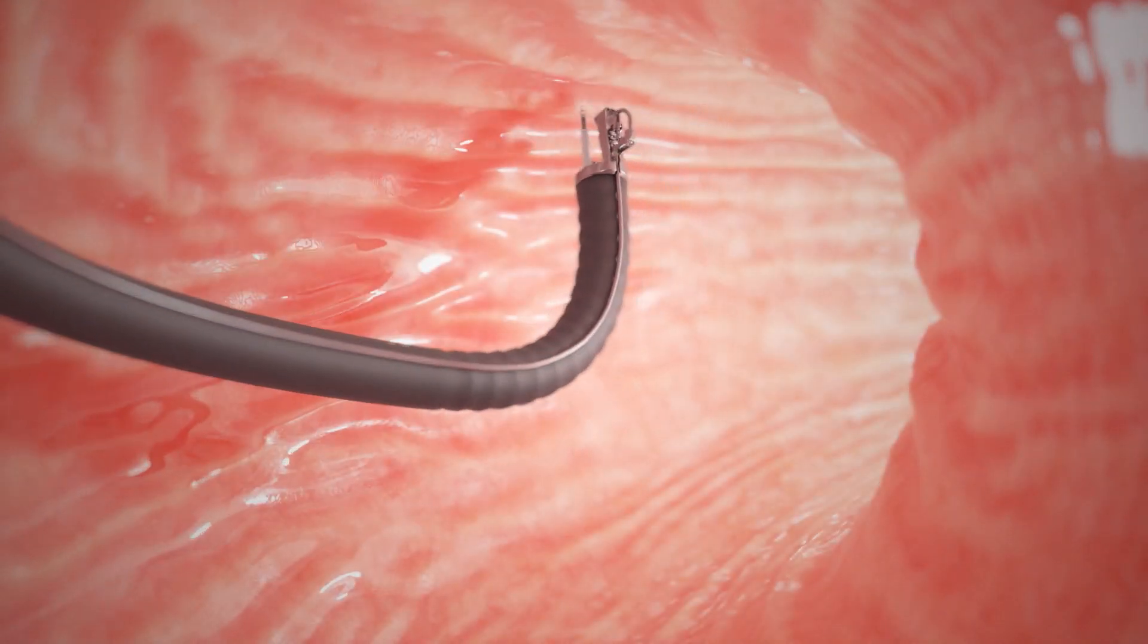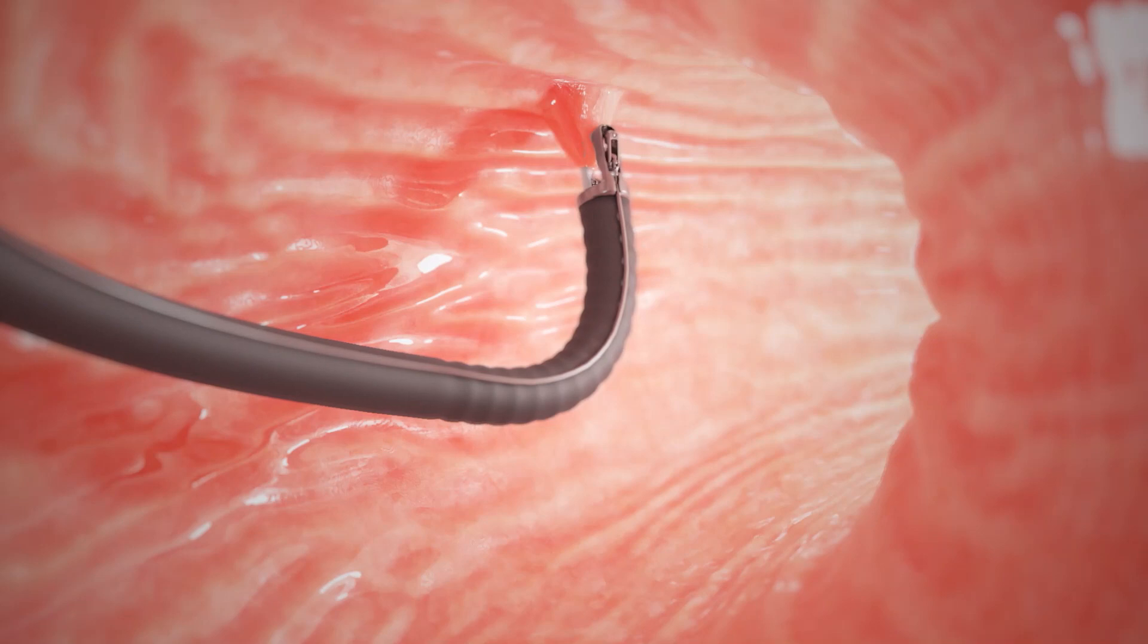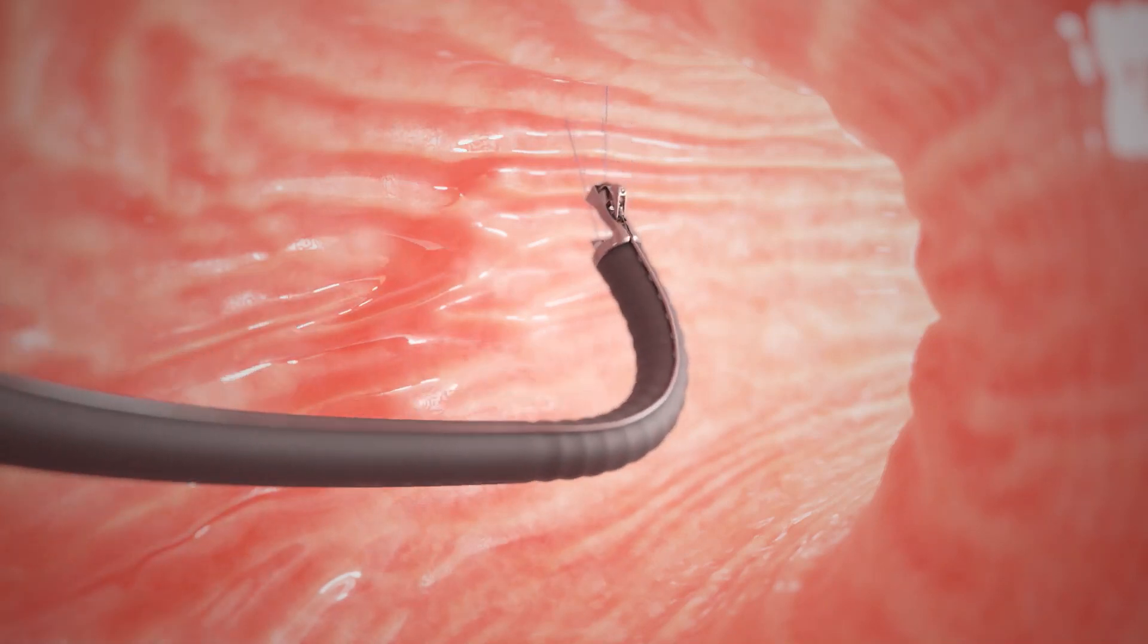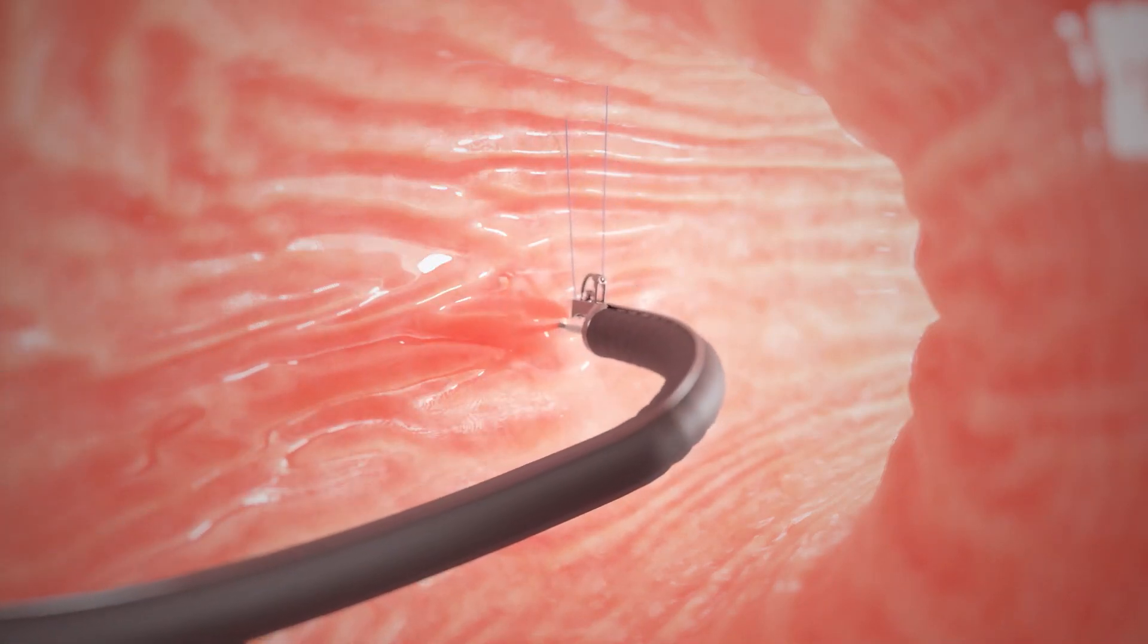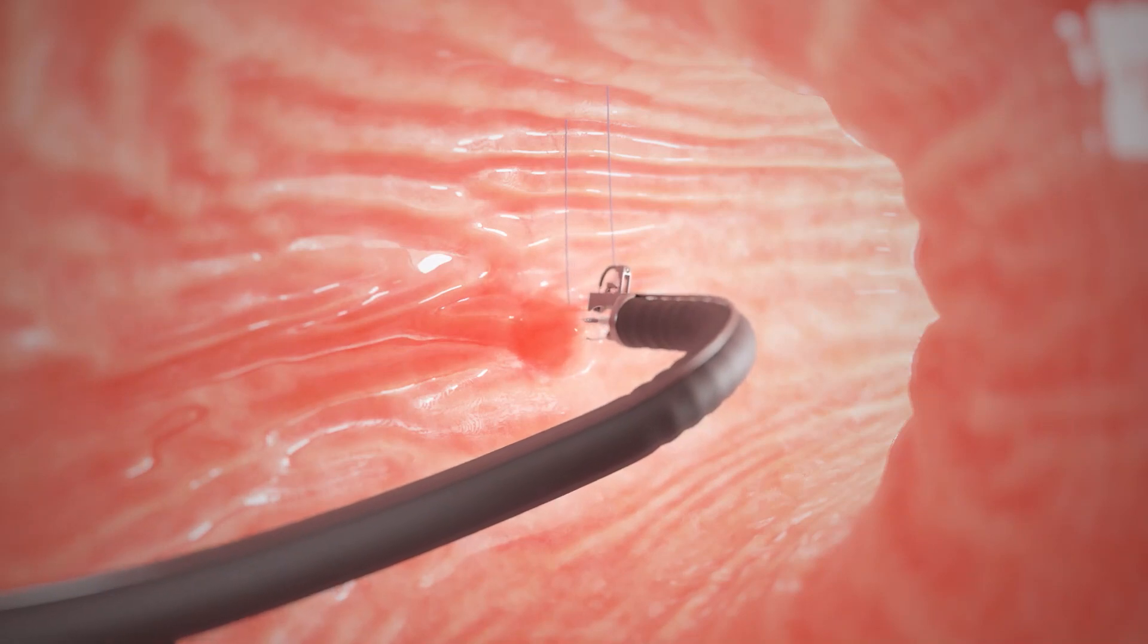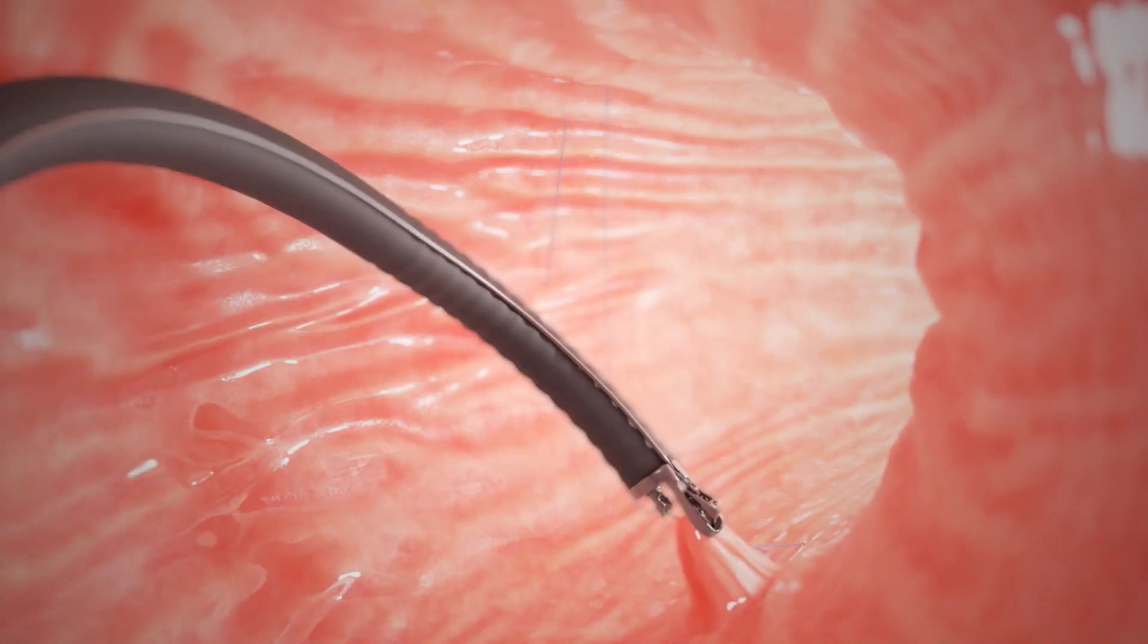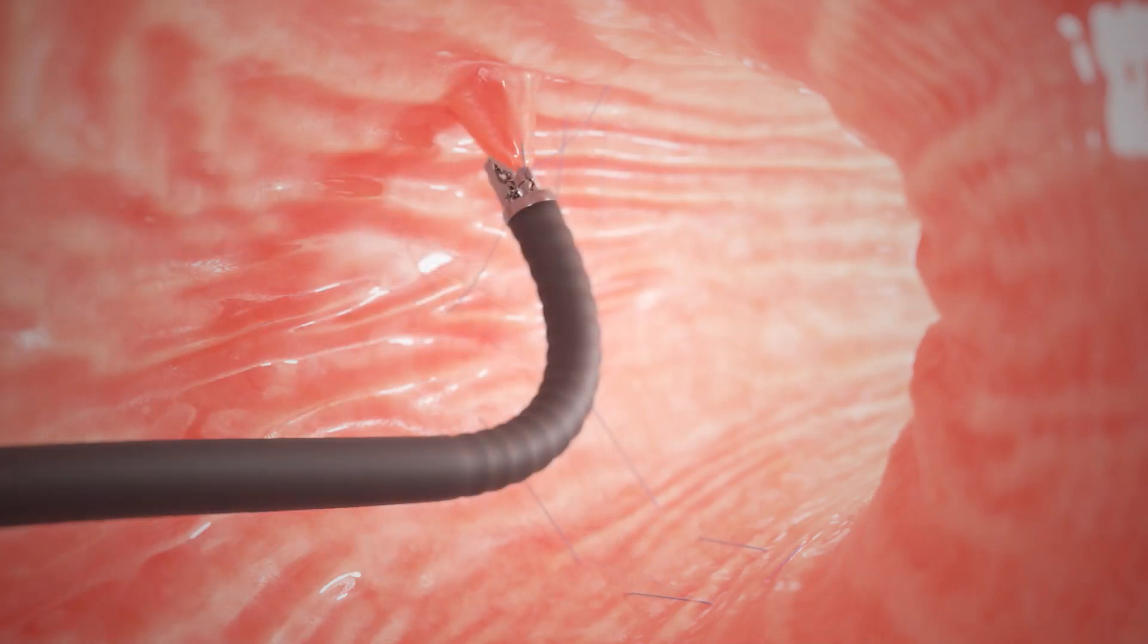The doctor uses the suturing device along the large curve of your stomach to sew it into a smaller shape. The stitches, also known as anchor sutures, are placed in a U-shaped pattern starting near the bottom of your stomach and working towards the top of the stomach.